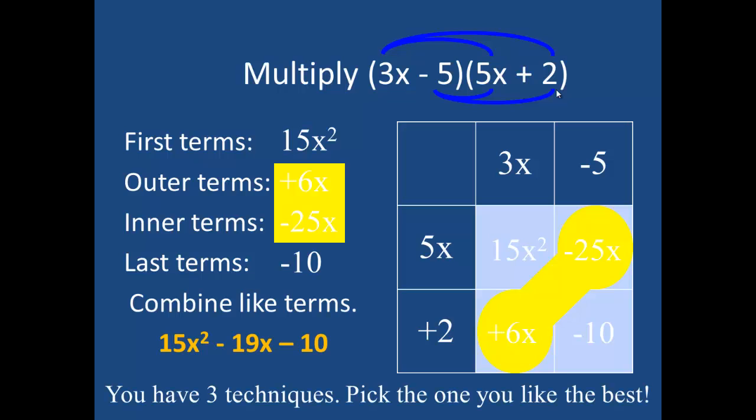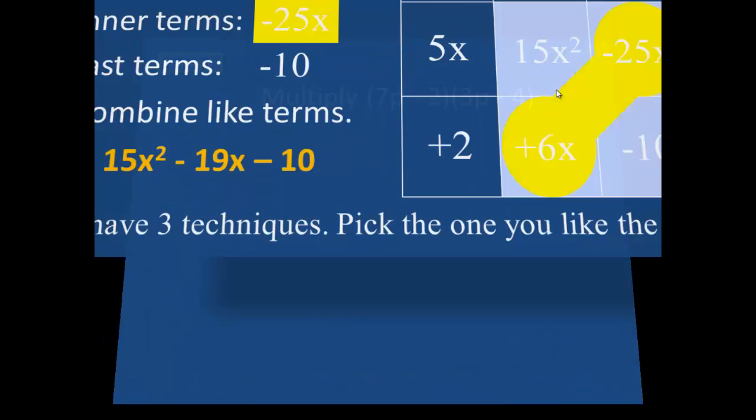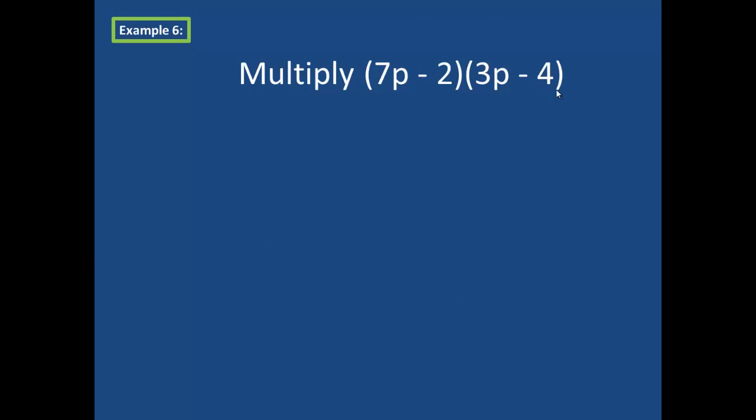As you can see, you have three techniques and you should pick the one you like the best. We have one last example today. We are going to multiply the binomial 7p minus 2 times 3p minus 4. I'm going to illustrate all three methods.